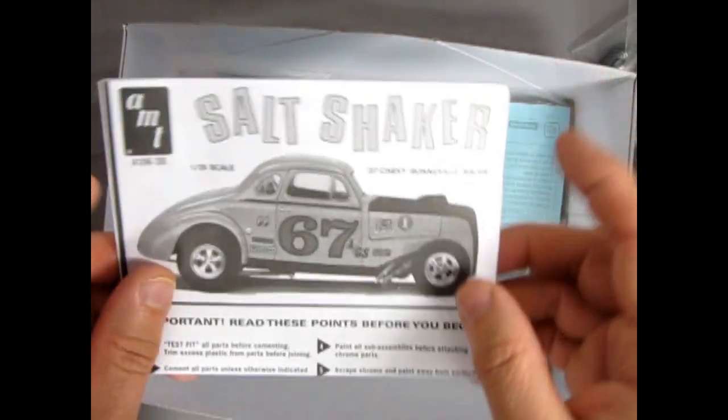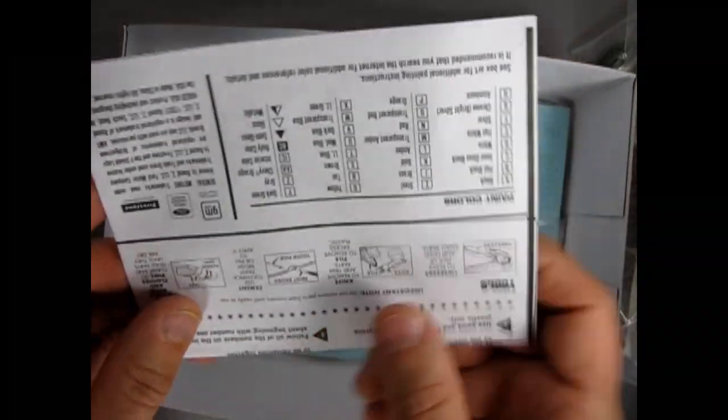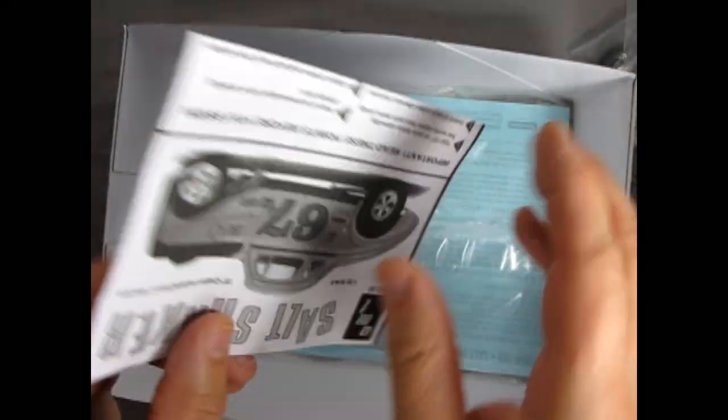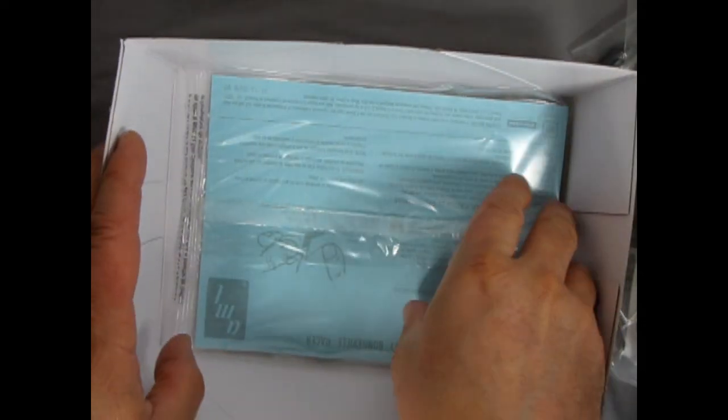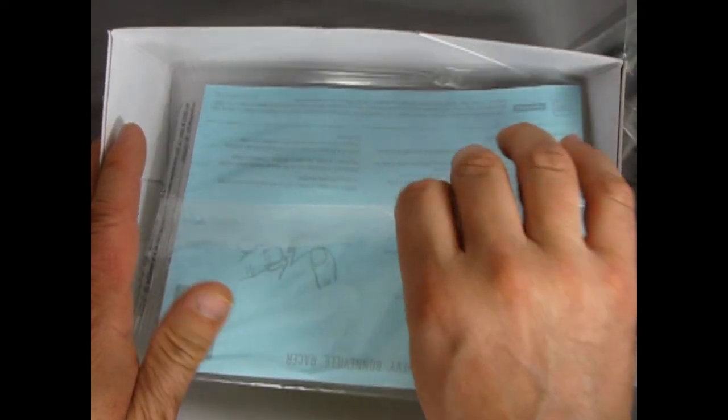Now we do have the instructions and these look like the reproduction from the 1979 version. I've been looking at instructions on Scalemates for all the versions. Oh look at this decal sheet. Fills the entire bottom of the box. So what I'm going to do is show this at the end of the video. I'll take off the yellow paper and then we can see exactly what this looks like.